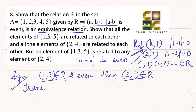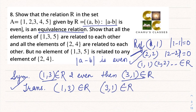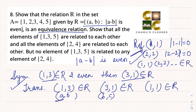Now let's check for transitive. Suppose (1, 3) belongs to R — difference is 2, even. And (3, 1) belongs to R — difference is 2, even. Is (1, 1) a part of the relation? Yes, because |1 − 1| = 0 which is even. So (a, b) ∈ R and (b, c) ∈ R implies (a, c) ∈ R. Therefore it is reflexive, symmetric and transitive, and therefore it is an equivalence relation.